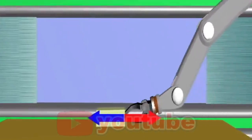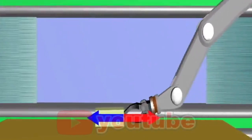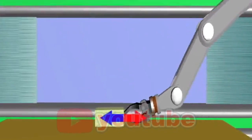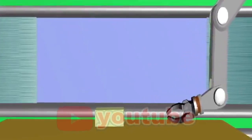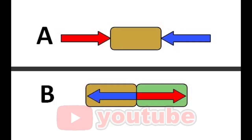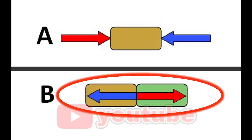This continues until the object begins to move. The mechanical arm then reduces the force, so the box also reduces the amount of force until both reach zero.